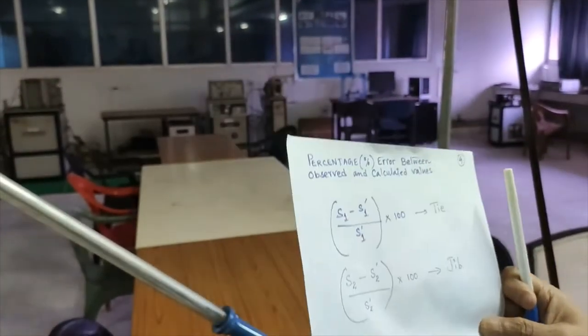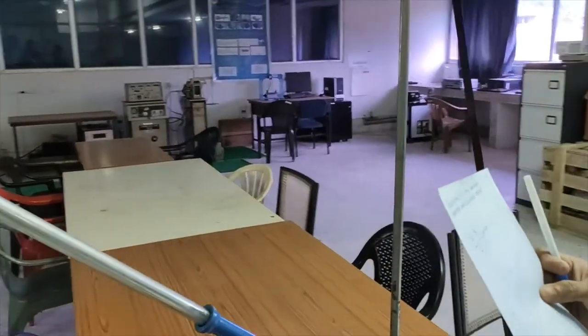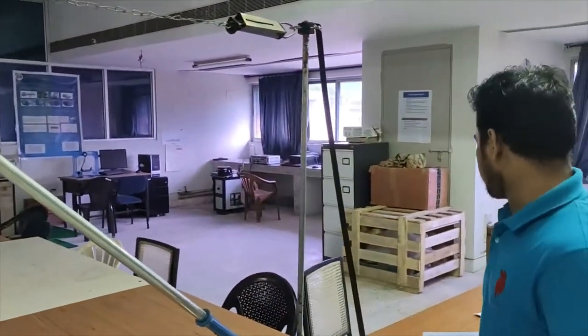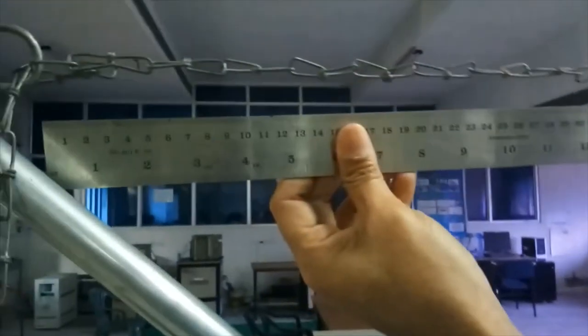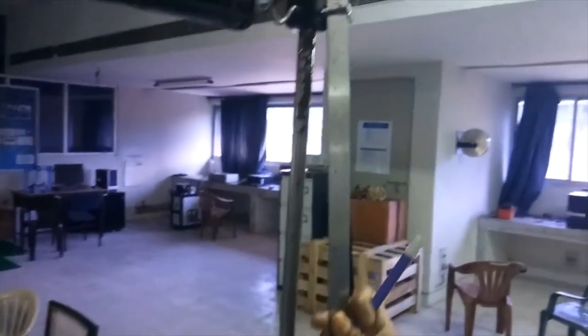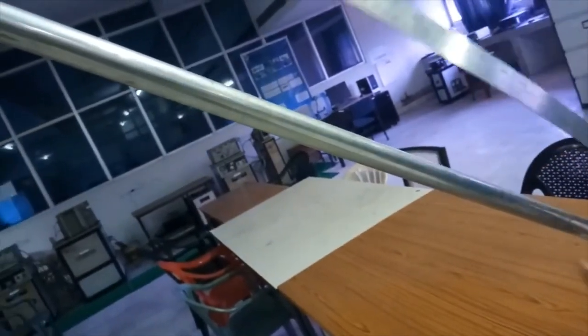In this way, we will take different set of readings with different loads. And to measure the length of the tie member and jib member and post member, we have to use this meter scale. Basically, we have to measure with respect to this pin joint, this way. And this way, this jib member is too long, so we can measure it partly.